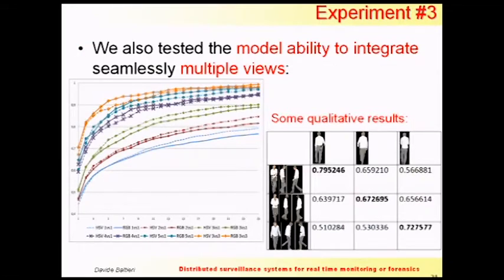I also tested the ability of the model to integrate multiple views — with one, two, three, four, five, and six images per model. This also shows how the model is able to localize features on a person, because these three people use very similar clothing with very similar colors, yet the model can discriminate them.